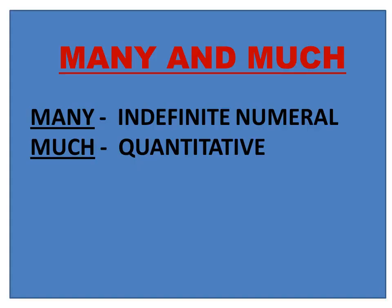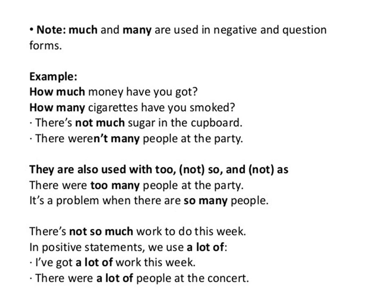Many and much work similarly. Many is your indefinite numeral and much is your quantitative determiner — used in the same sense but depending on the noun. With uncountable nouns we use much; with countable nouns we use many. They are used mainly in negative and question forms. 'How much money have you got?' — money is uncountable. 'How many cigarettes have you smoked?' — cigarettes are countable. They are also used with too, not so, and not as.